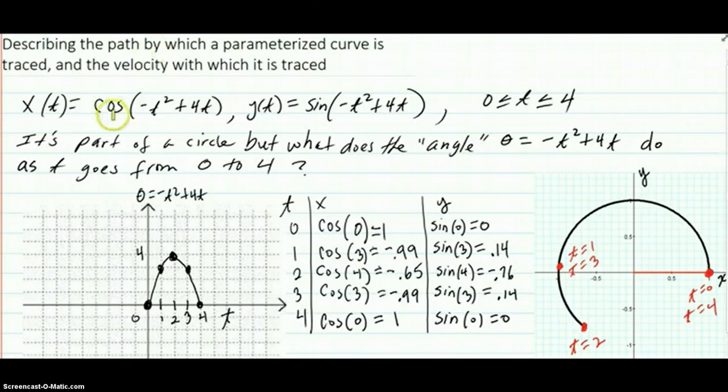First thing we notice is that x(t) looks like a cosine of an angle, and y is sine of an angle, so we know we're going to get some part of a circle. But we also realize that the t values are only going from 0 to 4, not 0 to 2π, so we're only going to get part of a circle.